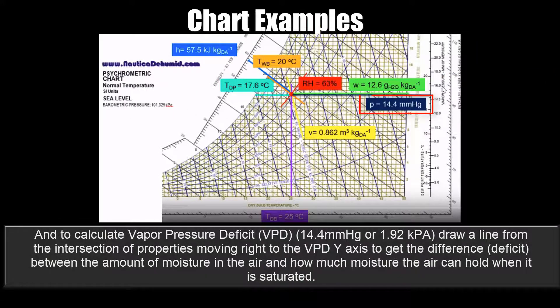And to calculate the vapor pressure deficit, or VPD, draw a line from the intersection of properties moving right to the VPD y-axis to get the difference, or deficit, between the amount of moisture in the air and how much moisture the air can hold when saturated.